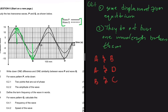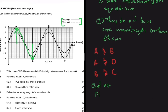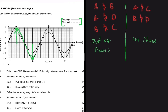Other out-of-phase pairs are A and D, and B and C. If the question asked for points in phase instead, we would name A and C — they have one wavelength between them — and B and D, which also have one wavelength between them and are therefore in phase.